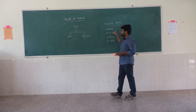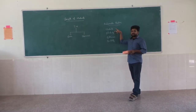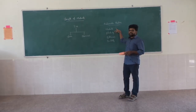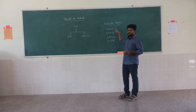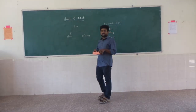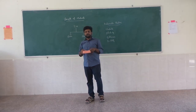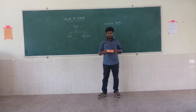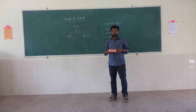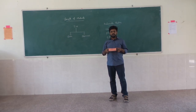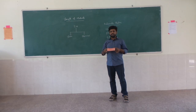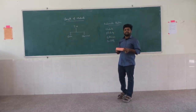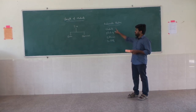Coming to the basic definitions — one is elasticity and plasticity. The basic difference: if you are considering a body and applying a force on it, it will be deforming. And if you remove the force, it will regain its original position. That is what we term as elasticity. The best example is a rubber band. If you apply force on a rubber band it will deform, and if you release the force it will regain its original shape and position.